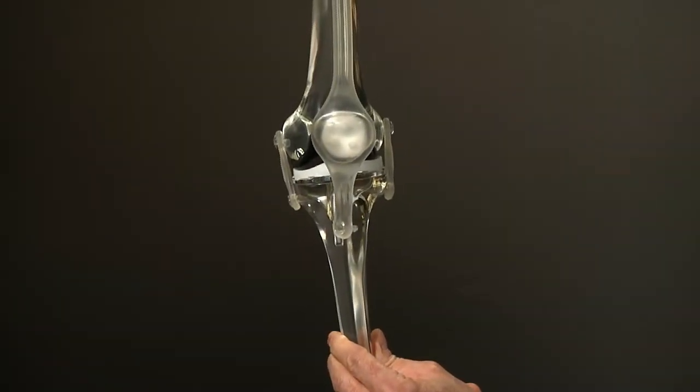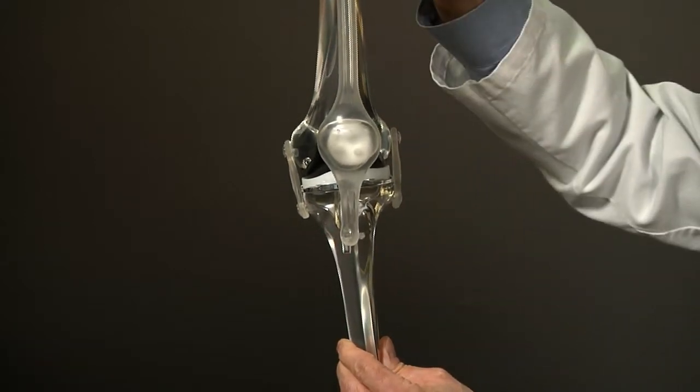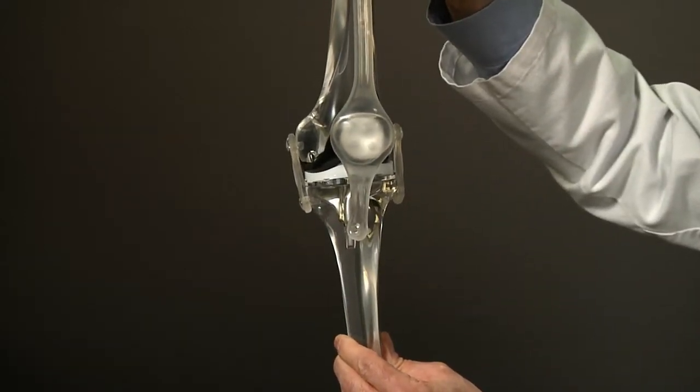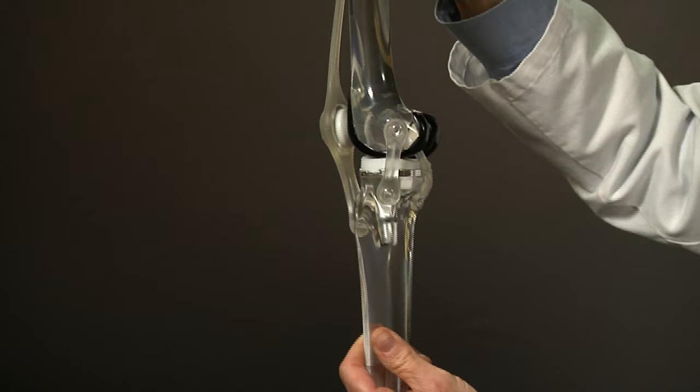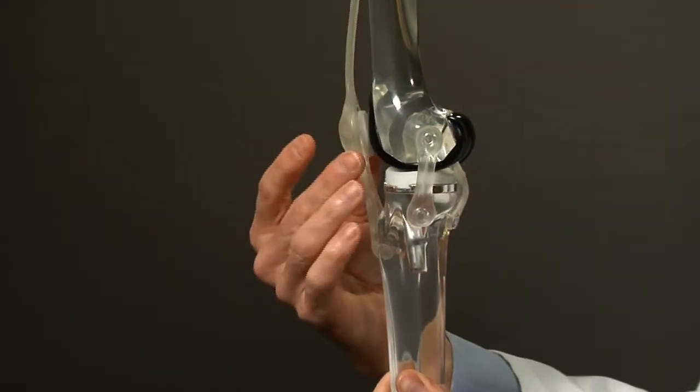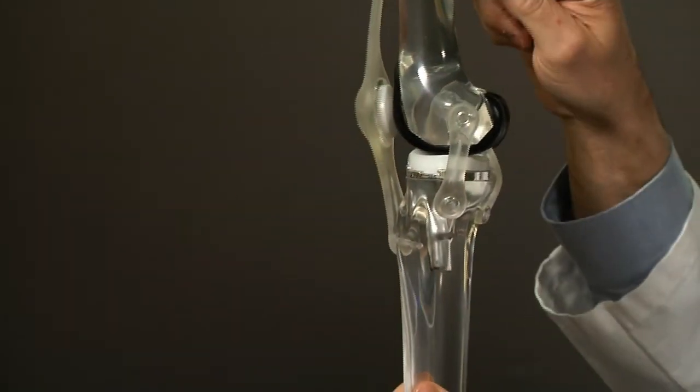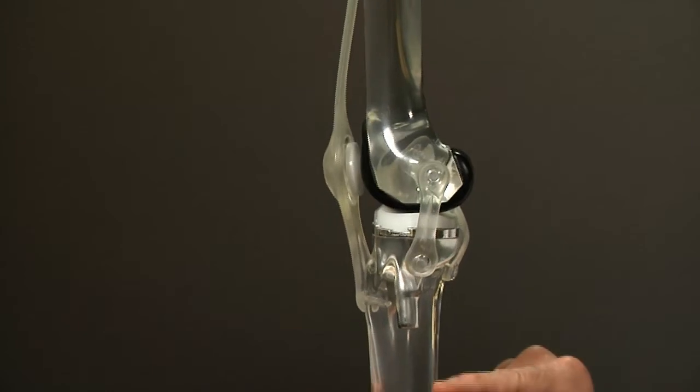This is a model of a completed total knee replacement. We're looking from the front, and now we're looking at the side view: the kneecap in the front, the thigh bone above, the shin bone below.